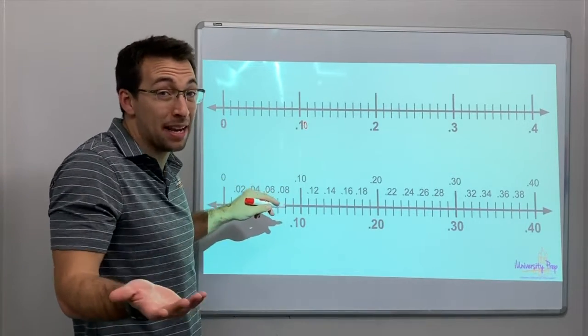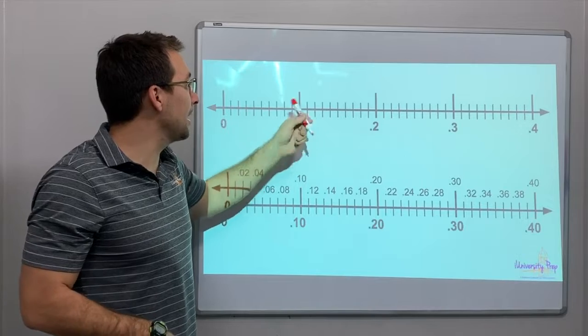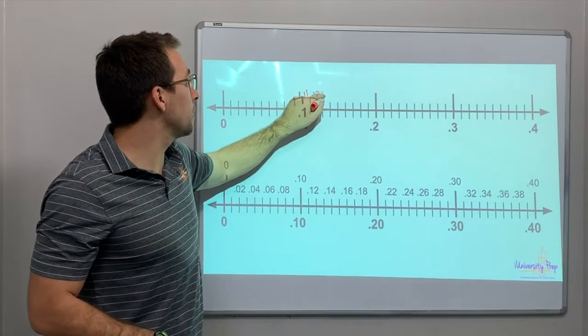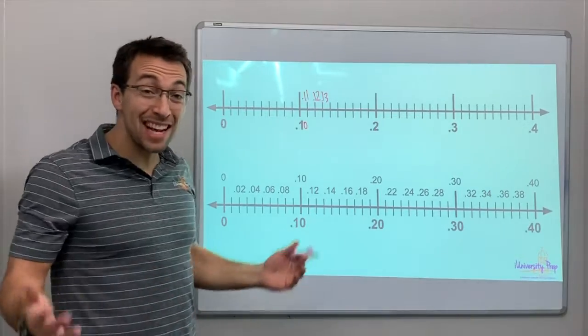So what comes after ten? One tenth is like ten pennies, right? So ten, eleven, point one, one, point one, two, point one, three. That's awesome.